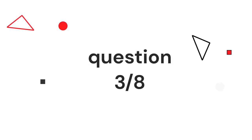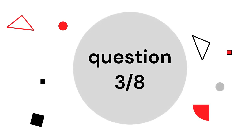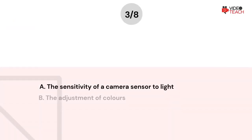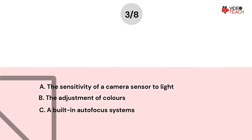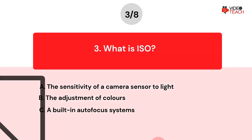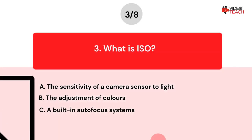Question number three. What is ISO? Option A: The sensitivity of a camera sensor to light. Option B: The adjustment of colors. Option C: A built-in autofocus system.